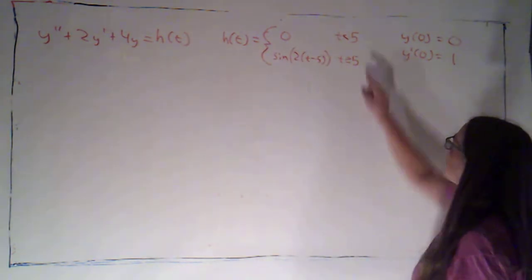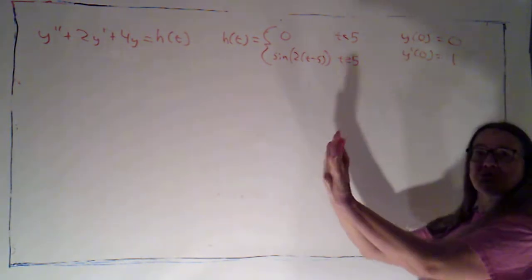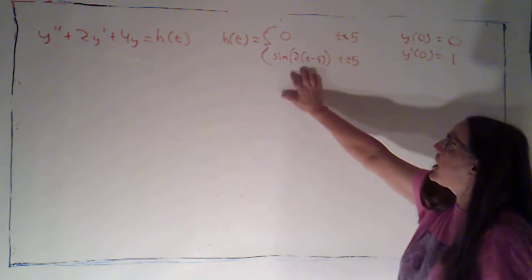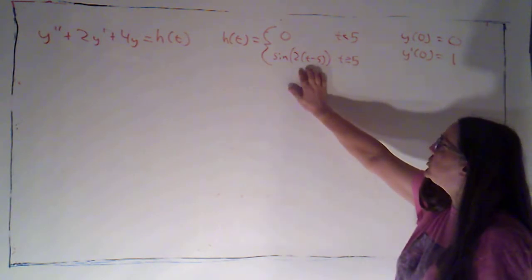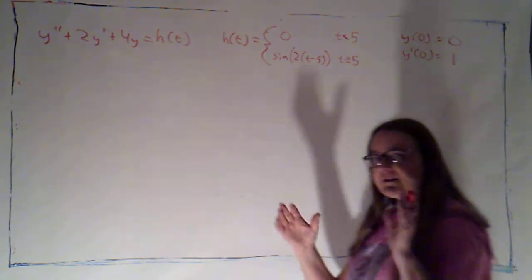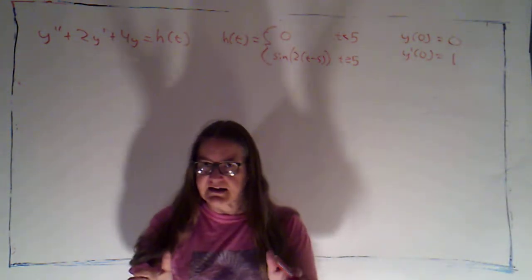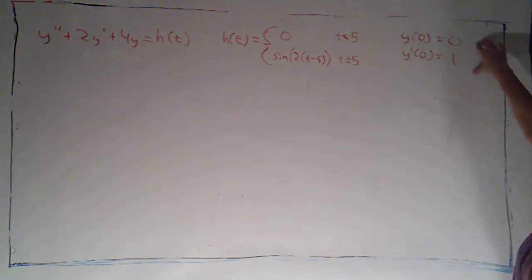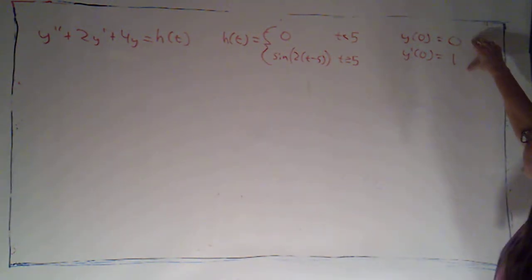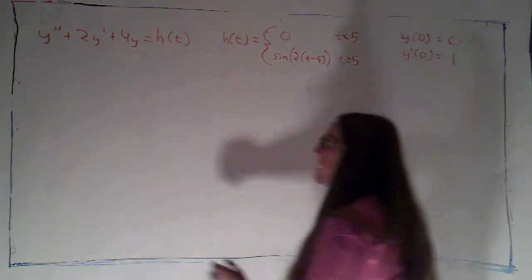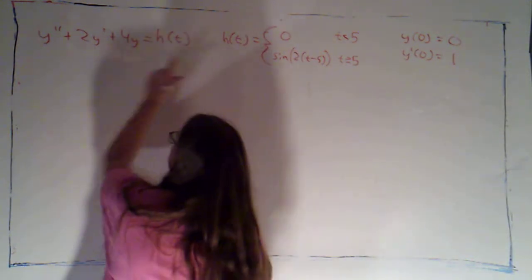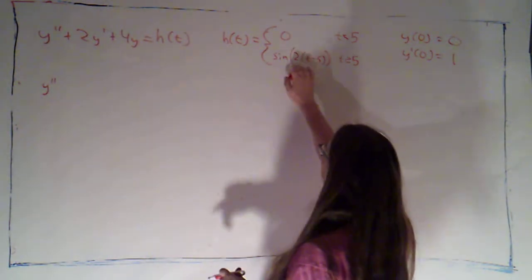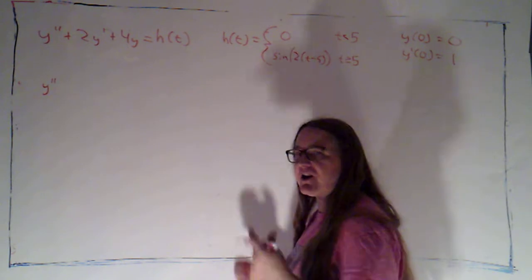If time were in seconds, for the first 5 seconds it's turned off — we're not applying any additional force. But at time 5, I turn on this forcing function: sine of 2 times t minus 5. Notice that's just the function sine of 2t, but shifted 5 units to the right. And I've got initial conditions: y at 0 is 0 and y prime at 0 is 1.